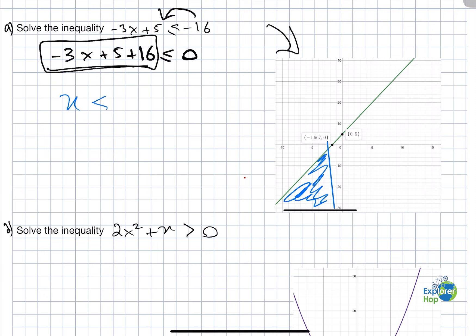When x ≤ -1.667, we can write our answer as negative infinity to -1.667, or in interval notation (-∞, -1.667].